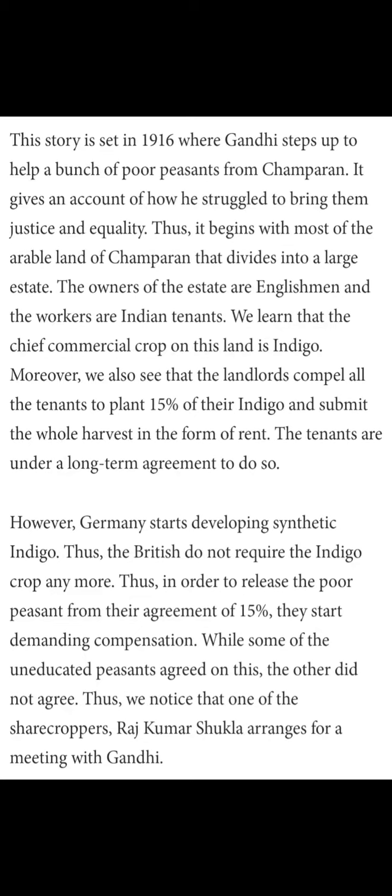The story is set in 1916 when Gandhiji steps up to help a bunch of poor peasants from Champaran on the request of Rajkumar Sukhla who met him. It gives an account of how he struggled to bring them justice and equality. It begins with most of the arable land of Champaran divided into large estates. The owners of the estates are Englishmen and the workers are Indian tenants. The chief commercial crop on this land is Indigo, and the landlords compel all the tenants to plant 15% of their land with Indigo and submit the whole harvest as rent.